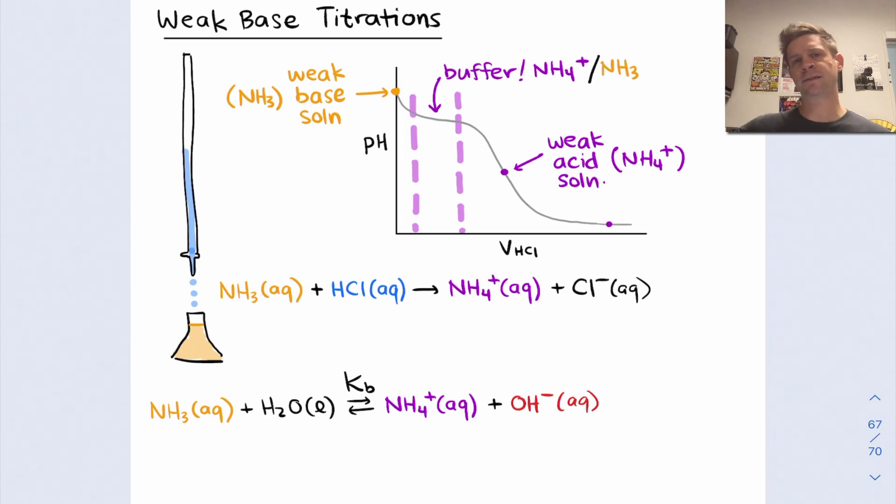Once we get out past that equivalence point, the pH is primarily dictated by the HCl titrant. For example, at this point far out to the right, we've got excess hydronium and the pH of the analyte-titrant mixture is approaching the pH of the titrant. We can't quite get there because we're diluting the titrant as we add it into the Erlenmeyer flask, but we can get arbitrarily close as we continue to add more and more titrant solution to the mixture.